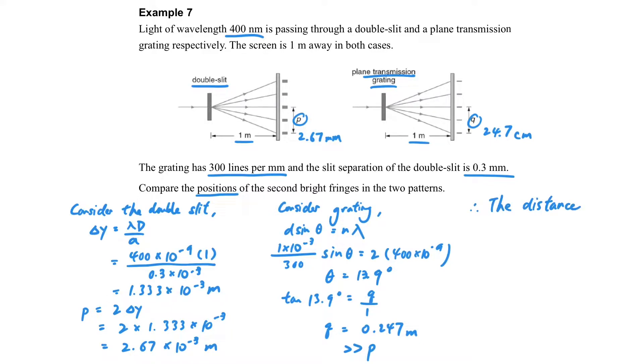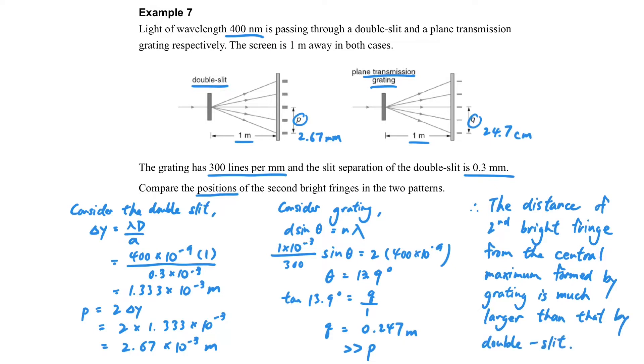So we can get the conclusion here. The distance of the second bright fringe from the central bright fringe - it is much larger. So as we have said in the previous part of this video, this is the advantage of using the transmission grating, because we can observe much more clearly the separation. So this is why we use the grating instead of double-slit.